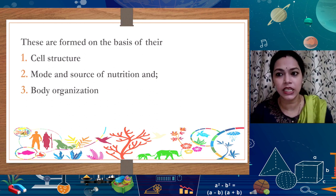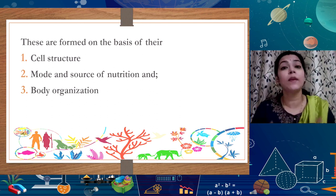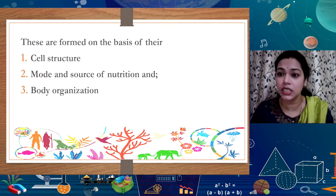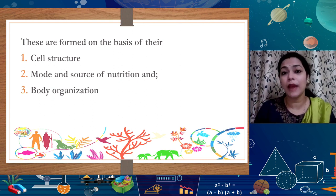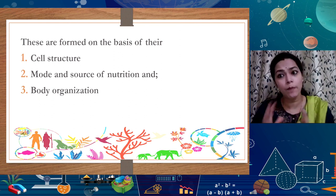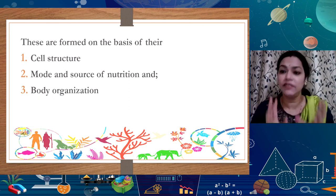The third criterion is body organization: whether the organism is unicellular — relatively simple — or multicellular, with multiple cells working in sync to form tissues, organs, and organ systems. For example, human beings are multicellular with a very complex and sophisticated organization — cells, tissues, organs, and organ systems like the digestive, respiratory, circulatory, nervous, and endocrine systems. So cell structure, mode of nutrition, and body organization are the primary criteria for dividing organisms into different kingdoms.